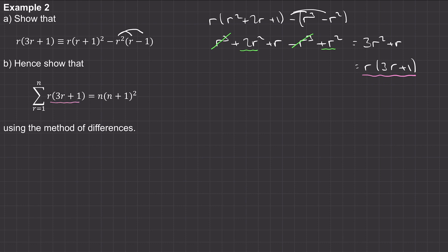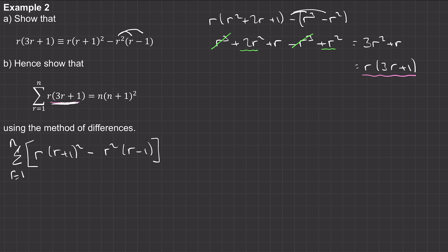Now we can rewrite the sum from one to n of r times three r plus one, which we know is the same as r lots of r plus one squared minus r squared times r minus one. We can split this into two sums: the sum from one to n of r lots of r plus one squared, minus the sum from one to n of r squared times r minus one.